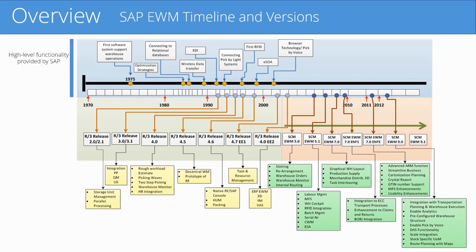You can see electronic data interchange, EDI, and wireless data transfer — that's the high-level functionality provided by SAP. In the 1970s, that's when SAP introduced its first enterprise resource planning system. In the middle of the chart, we can see on the left side the different versions of R3, which were the enterprise resource planning ERP systems provided by SAP.